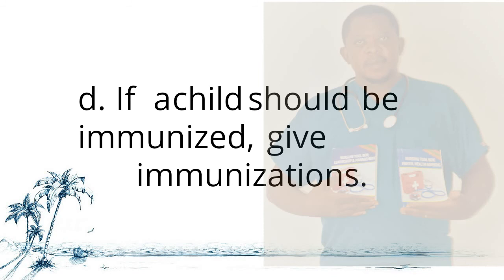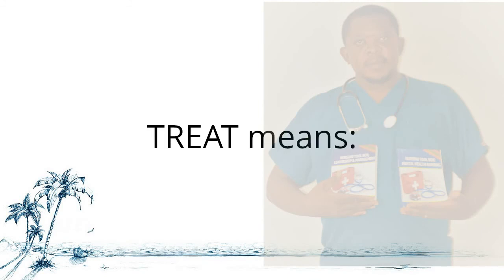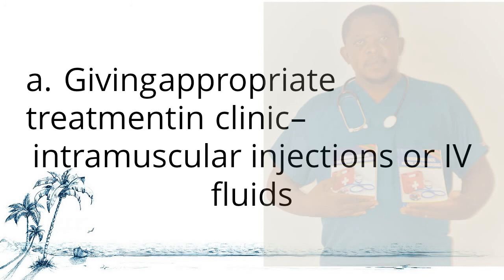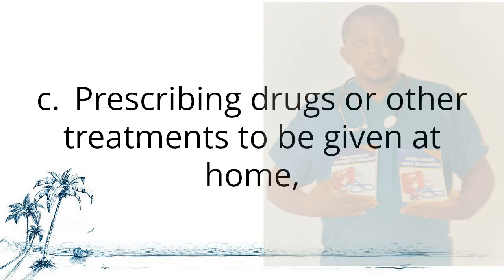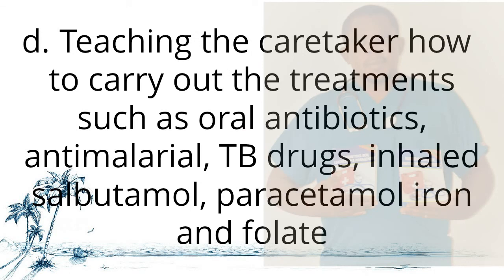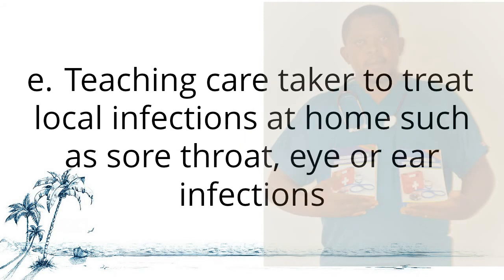Step four is treating the child. This means giving appropriate treatment in the clinic such as intramuscular injections or IV fluids, prescribing drugs or other treatments to be given at home, and teaching the caretaker how to carry out treatment — such as oral antibiotics, antimalarial drugs, TB drugs, inhaled salbutamol, paracetamol, and iron and folate. You can also teach the caretaker to treat local infections at home such as sore throat, eye, or ear infections.